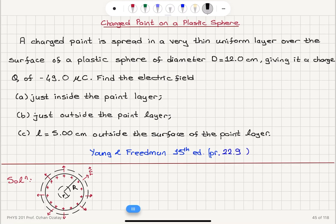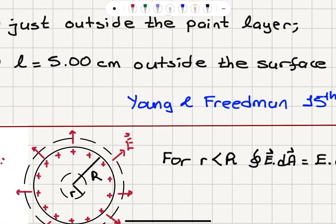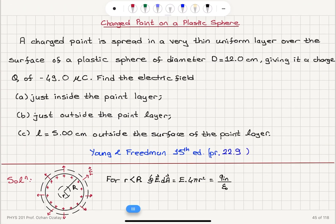Let's start with inside the paint, for r less than capital R. The closed surface integral E dot dA, the total flux, is equal to electric field times 4πr², because the electric field is radially outward and the surface area of a sphere is 4πr². This equals charge enclosed divided by ε₀. But for this Gaussian surface, we don't have any charge inside — all the charge resides at the surface of the sphere — so the total flux is 0. Therefore, the electric field for r less than capital R must be 0.